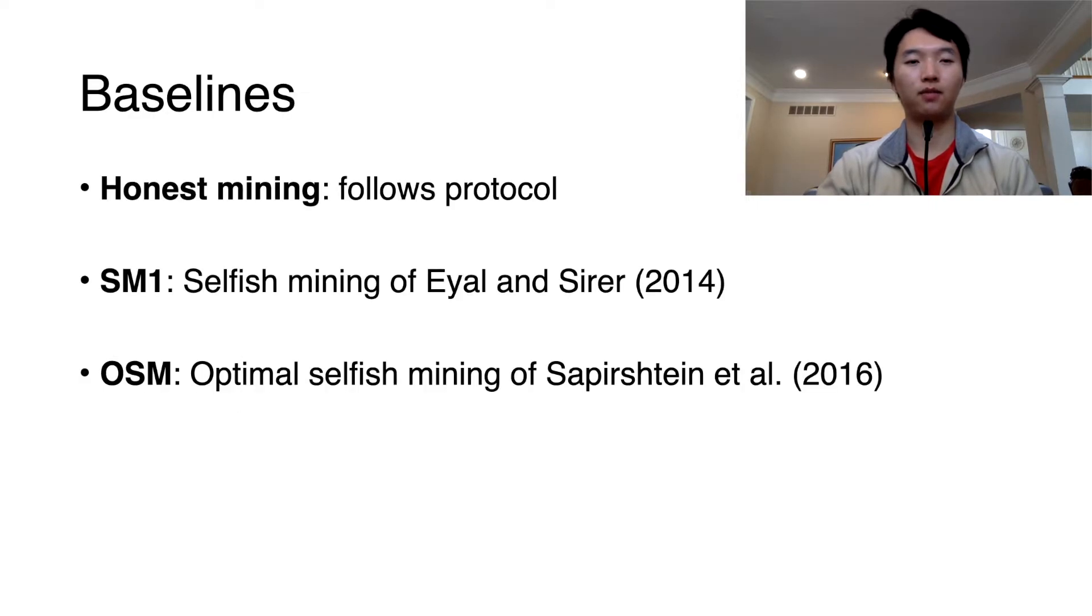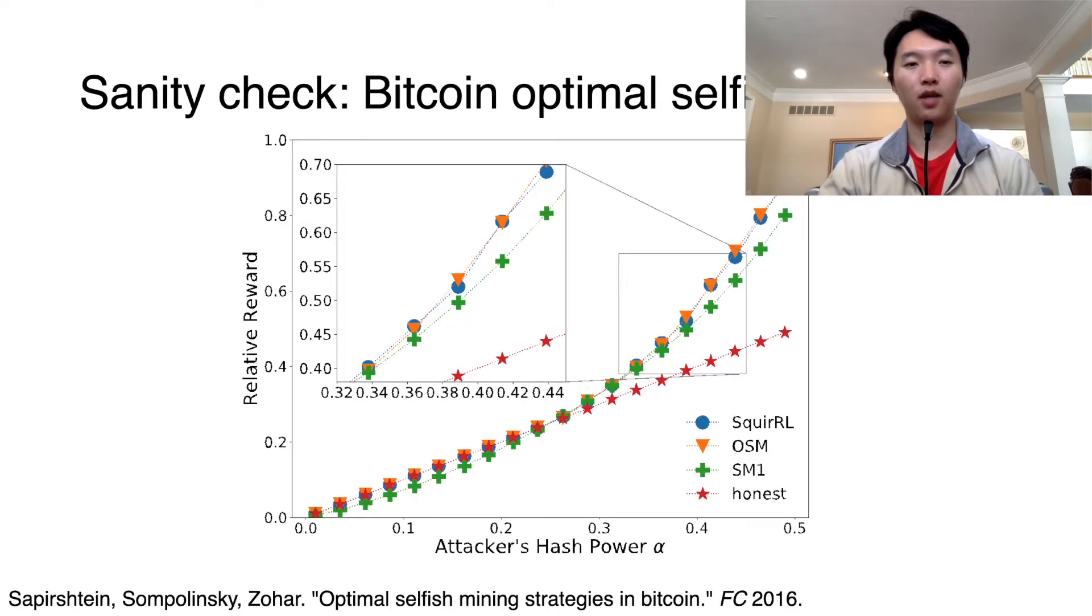Let's start out with our sanity check. We compare the following three mining strategies against the strategy found by Squirrel in the Bitcoin setting as baselines. We consider the honest mining strategy, which follows protocol. We consider the original selfish mining strategy, which we call SM1, and we consider the optimal selfish mining strategy, which we call OSM. In this graph, the x-axis is the attacker's hash power, and the y-axis is the fraction of total reward that the attacker received. We can see that Squirrel is able to recover the optimal selfish mining strategy. It is able to recover the same reward as OSM, and the strategy it employs is indeed the same.